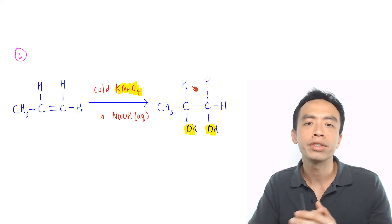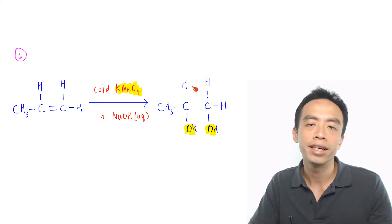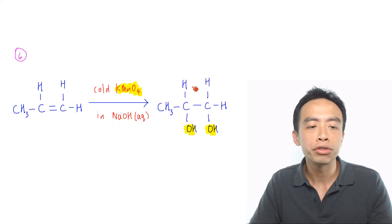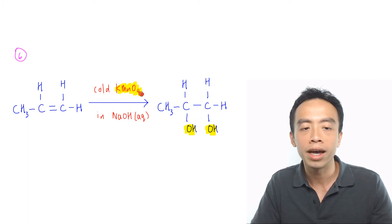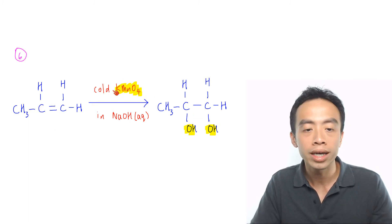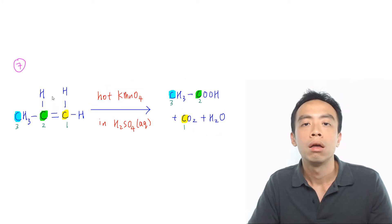Must-know reaction number 6 is the mild oxidation of alkene to form a diol. This is done via cold KMnO4 in aqueous NaOH.